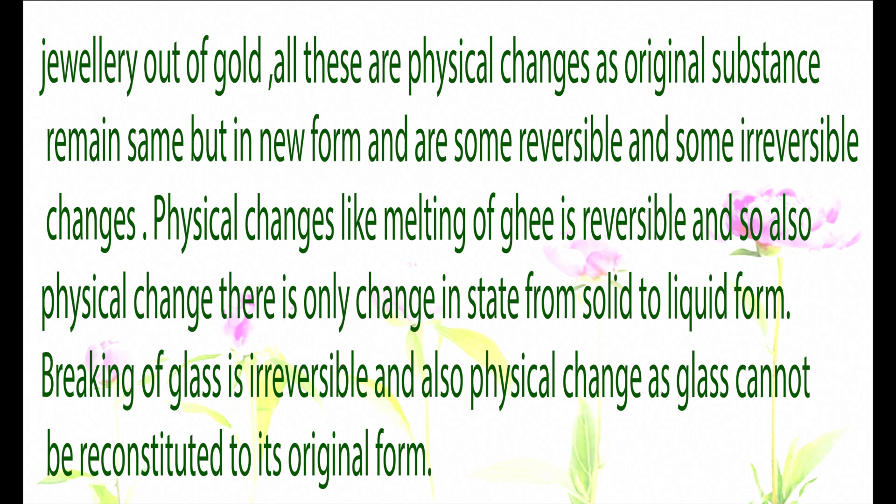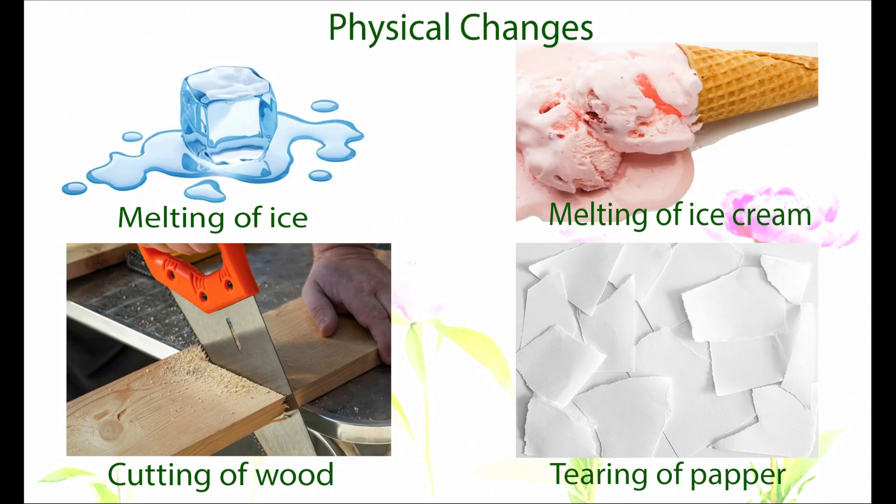Making ornaments or jewelry out of gold is a physical change, as the original substance remains the same but in a new form. Some physical changes are reversible and some are irreversible — for example, melting of ghee is reversible, changing only from solid to liquid form. But breaking of glass is irreversible, as glass cannot be reconstructed into its original form. Similarly, melting of ice into water and freezing of water back into ice is a reversible physical change.